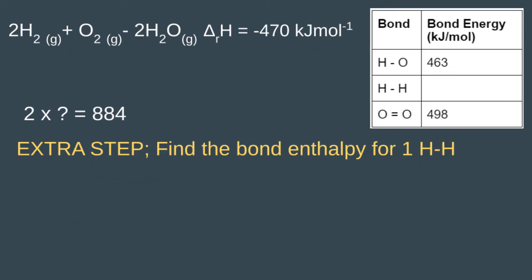But we want the bond energy for one H-H bond. There is an extra step here because we don't have a one-to-one ratio in our balanced equation. So to find the bond enthalpy for one H-H bond, we need to divide 884 by 2.